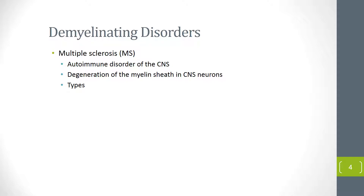It has been suggested that second and third degree relatives of a person with multiple sclerosis are at increased risk of developing MS. When studying twins, there is a 25% concordance rate in monozygotic twins.